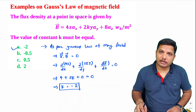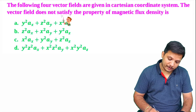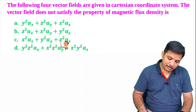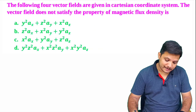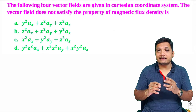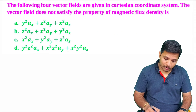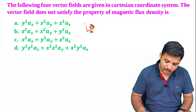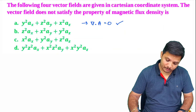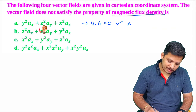Now let us look at another very interesting question based on Gauss's law for magnetic field. Four vector fields are given in a Cartesian coordinate system. We need to identify which vector field does not satisfy the property of magnetic flux density. The property to check is: if it is a magnetic field, then del dot B equals zero. So we need to identify which vector has del dot that vector not equal to zero.